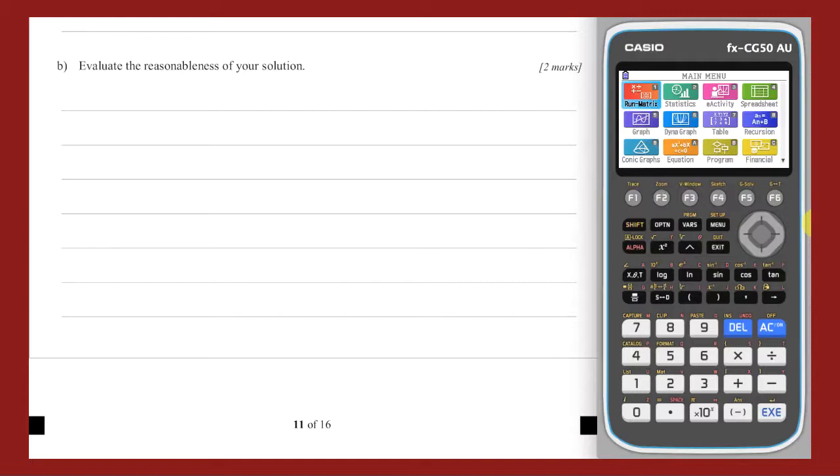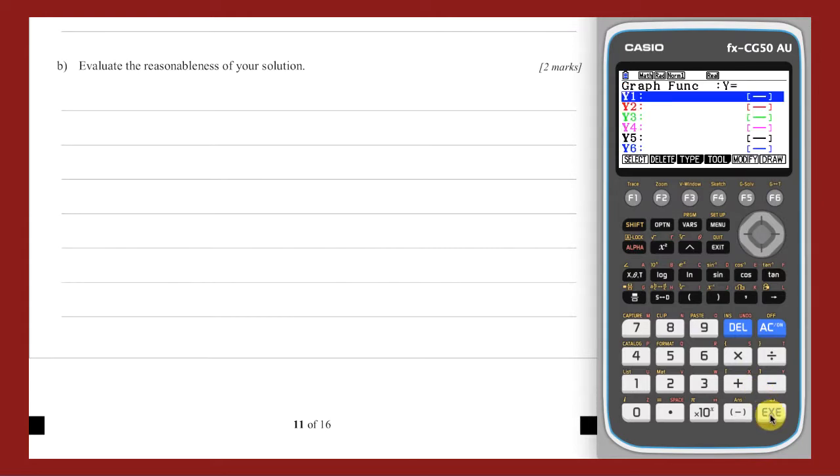Part b. To help me evaluate the reasonableness of my solution, I'm going to graph it using the graph app of my Casio CG50AU. Firstly, I'm going to enter the function as y1.